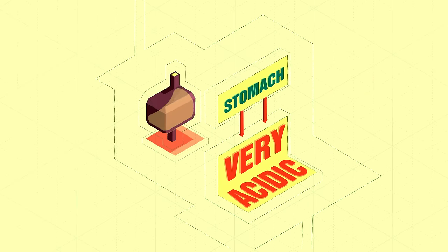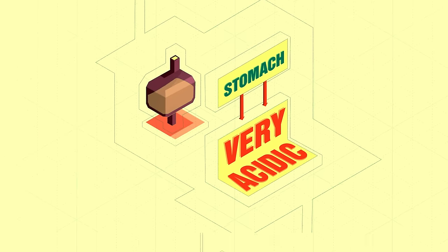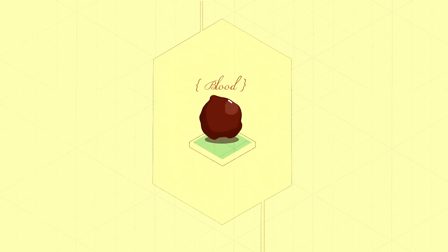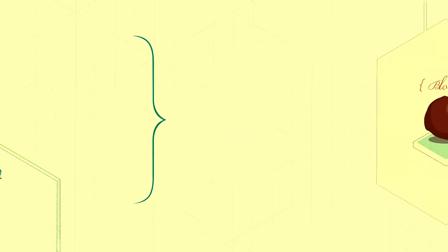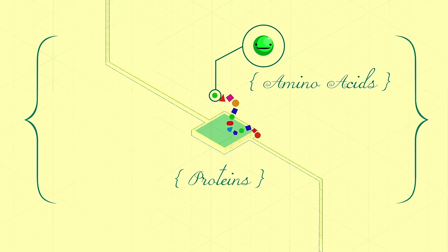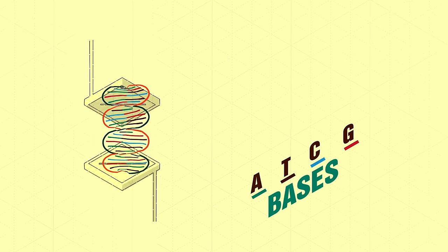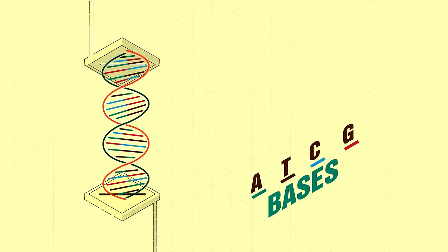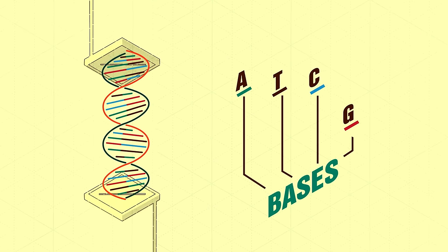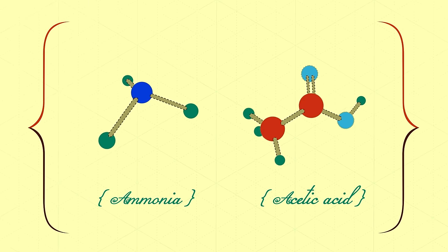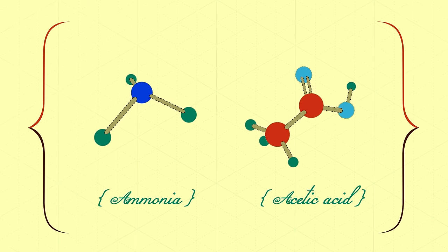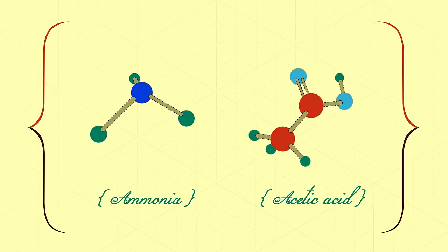Our stomachs are very acidic. Our blood is slightly basic. Our proteins are made up of amino acids. And the letters in our genetic code — those A's, T's, C's, and G's — are all bases. You were probably taught how acids and bases behave on the molecular level.